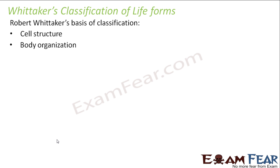The second basis was body organization — how the body is organized. We all know that the body is composed of cells, but how the cells are organized to form the body is different in different organisms. In complex multicellular organisms, cells form tissues, tissues form organs, and organs form organ systems. But that is not true in case of small organisms like bacteria. There are even some organisms where cells form tissues but the tissues do not form organs. So body organization was taken as another basic characteristic for classification.